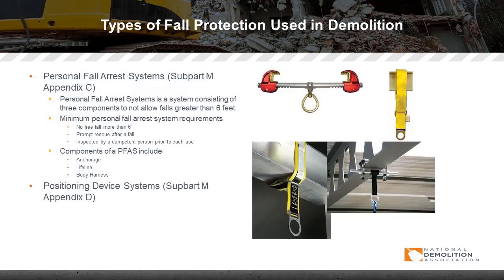The personal fall arrest system is a system consisting of three components that prevents employees from falling greater than six feet. Minimum personal fall arrest system requirements include no free fall of more than six feet, prompt rescue after a fall, and inspection by a competent person prior to each use. Components include anchorage, lifeline, and body harness.